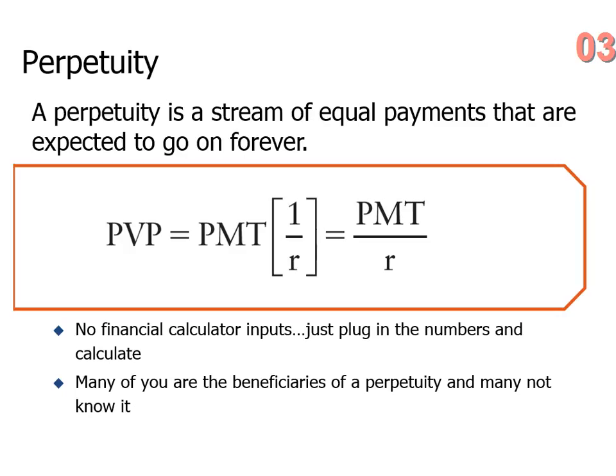The discount rate can be your required rate of return. If you're doing this in terms of a corporation, it could be the cost of raising capital — there are several ways to compute the discount rate. We calculated the present value of a lump sum; the present value of an annuity works basically the same way, except you put a payment in.